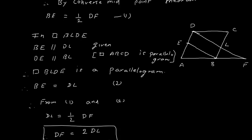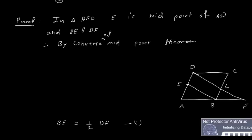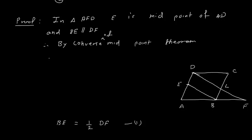By converse of midpoint theorem, I can say that B is the midpoint of AF. We have taken triangle AFD. So B is the midpoint of AF. Therefore AB equals half of AF. AB is half of AF.